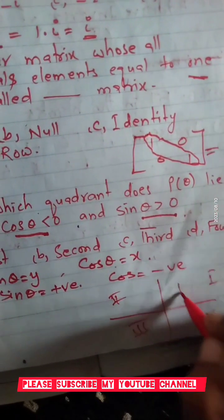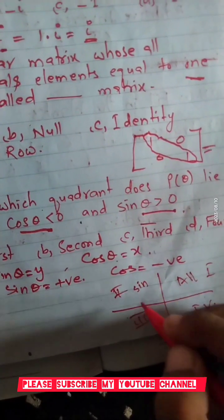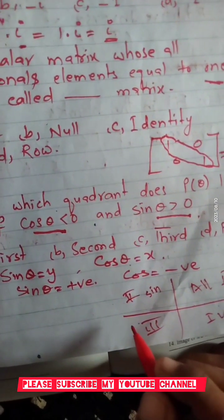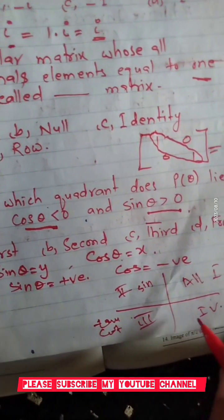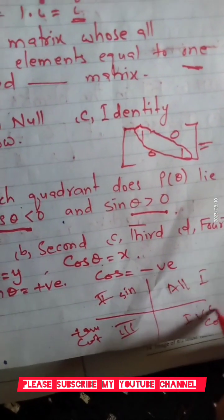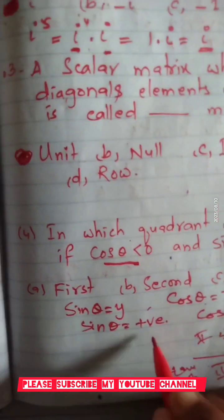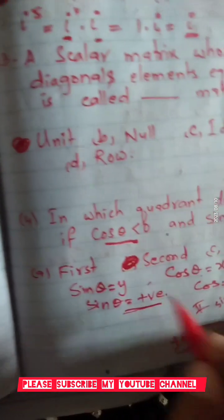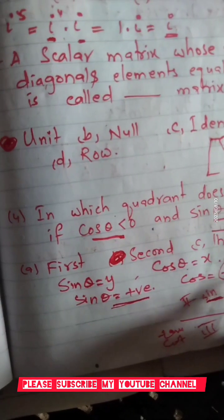In the second quadrant, sin is positive. In the first quadrant, all are positive. In the third quadrant, tan is positive and sin and cos are negative. In the fourth quadrant, cos is positive and sin is negative. The answer is the second quadrant — sin positive, cos negative.